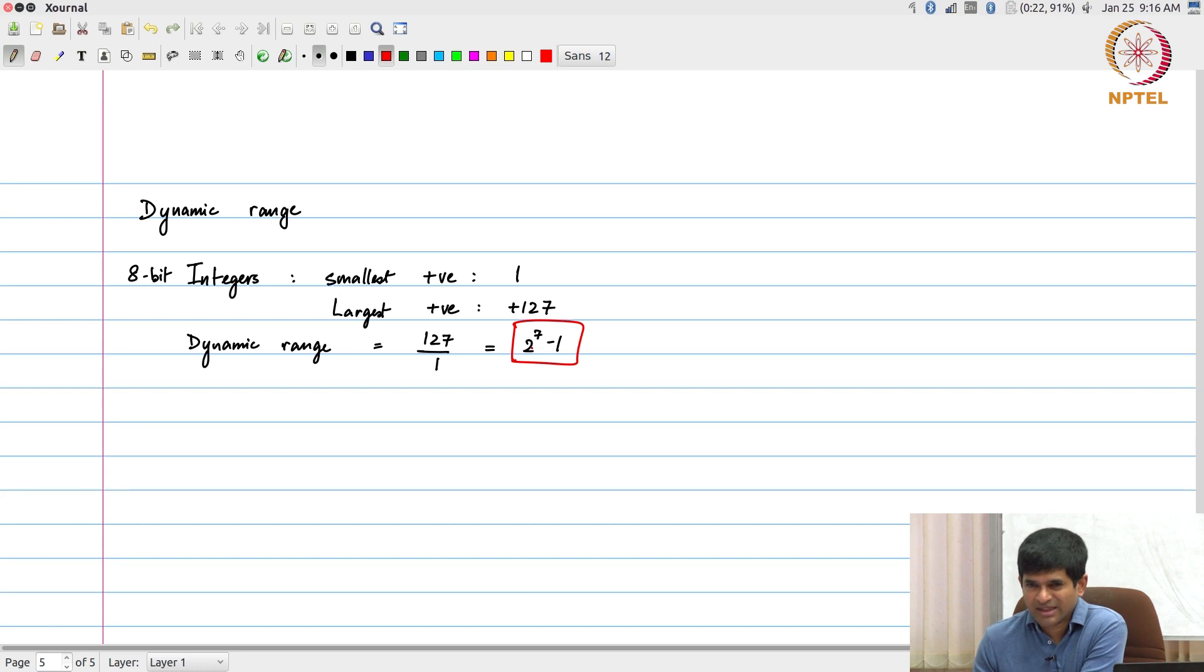If I look at the negative values, it would basically be exactly 2 power 7, that is the range. This difference is small enough that I am not going to bother about it. I am just going to say 2 power 7 as the dynamic range.